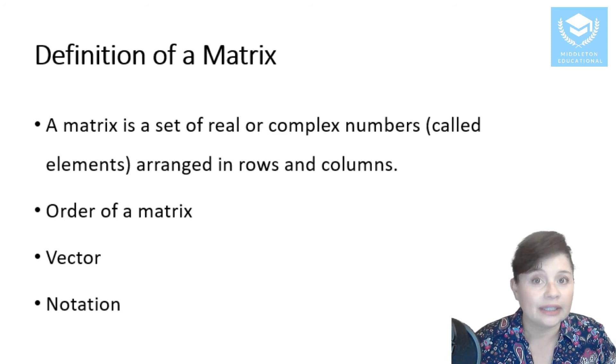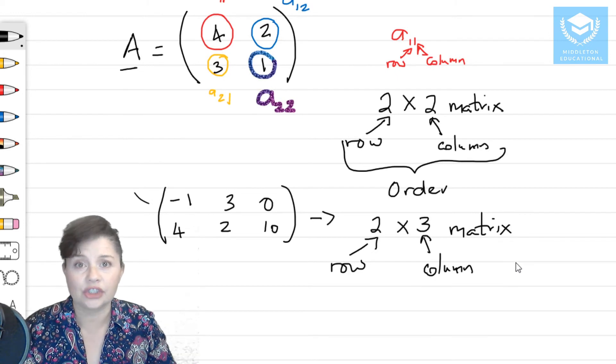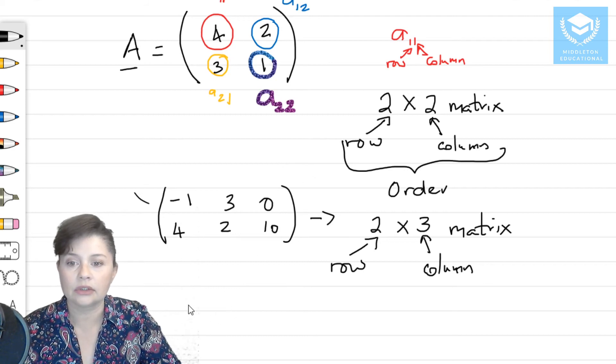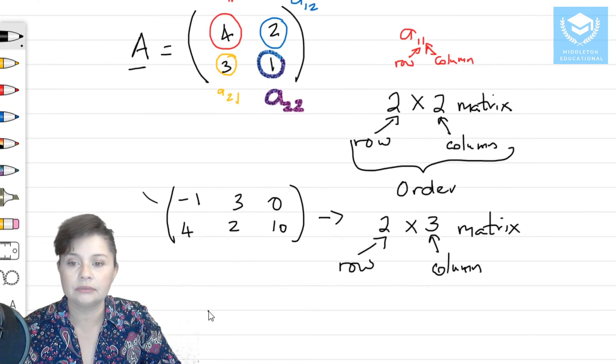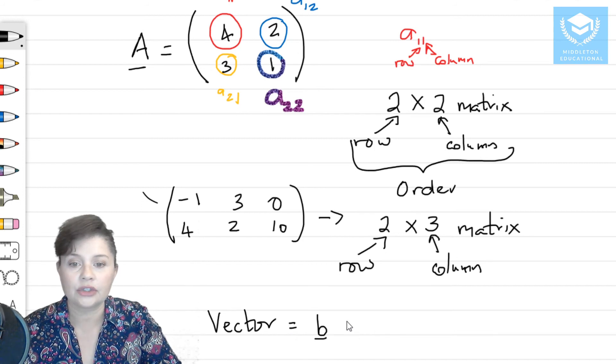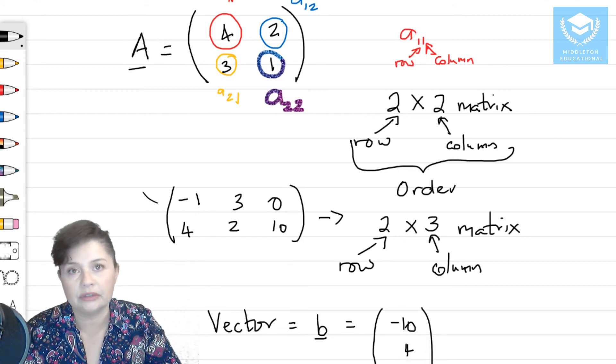Let's look at what a vector is. And a vector is quite simple. A vector is just a matrix with one column. So it would be something like, a vector would be, I'm going to call it like that, that's the notation we use, and it would be something like minus 10, 4, 0. That would be a vector.